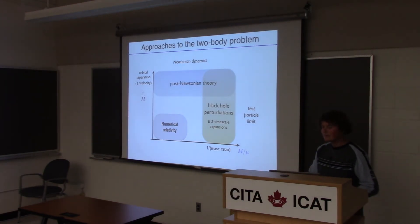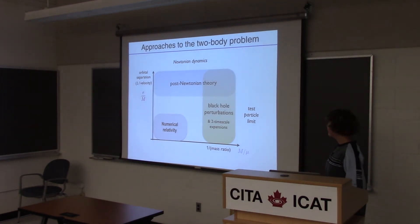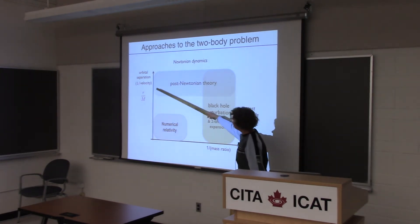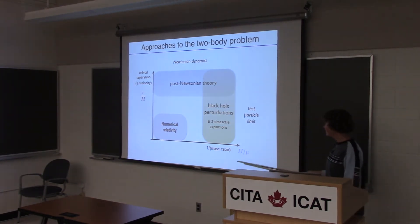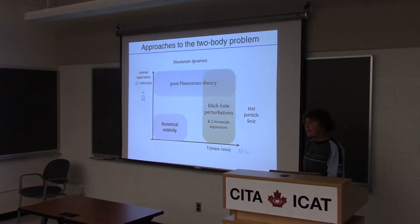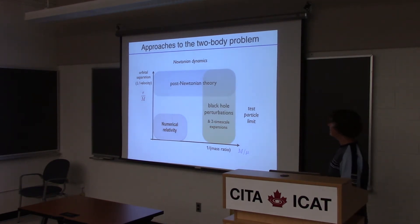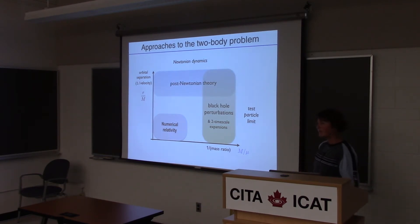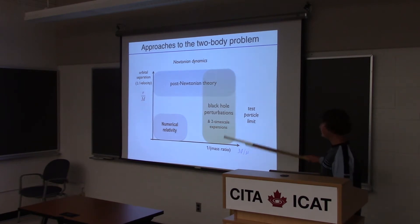To tackle this problem, we have different tools available, illustrated for the parameter space of binaries in terms of their orbital separation on the y-axis and their mass ratio on the x-axis. For binaries at large orbital separation where the gravitational field is weak, one can use post-Newtonian theory, which is essentially perturbations on top of Newtonian dynamics gradually including more relativistic effects. This is very successful for describing the solar system or binary pulsars, but it breaks down in the strong field regime at small orbital separation.